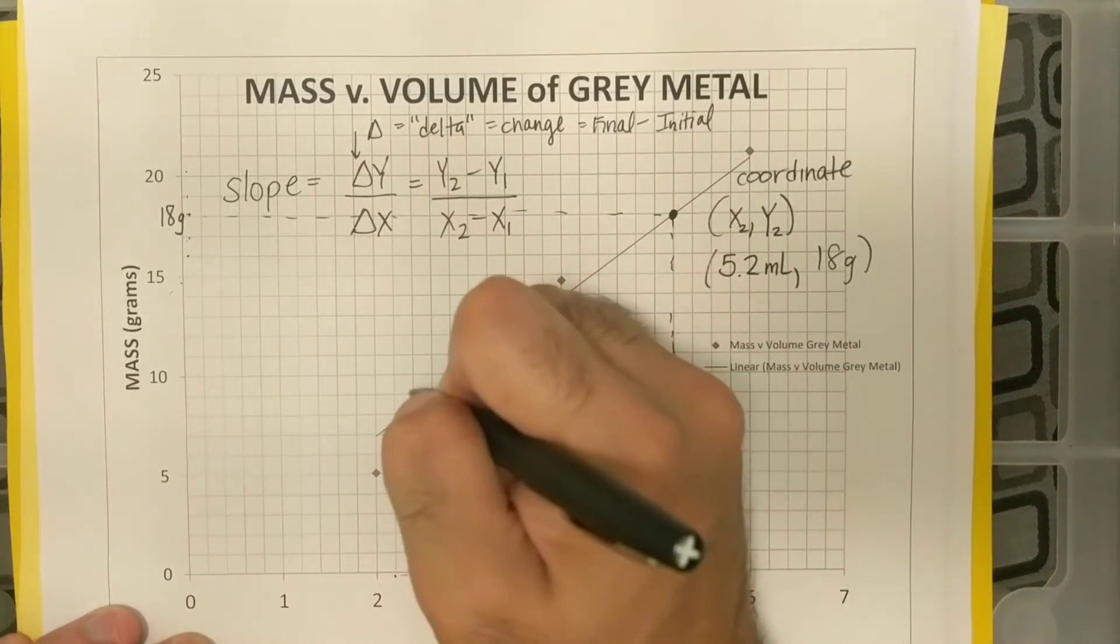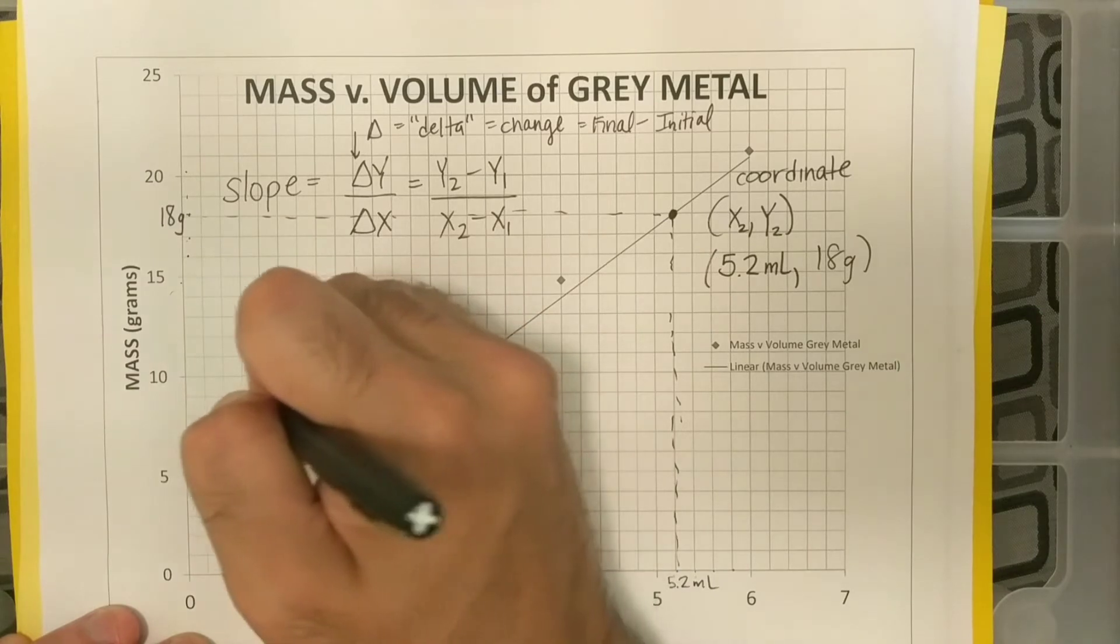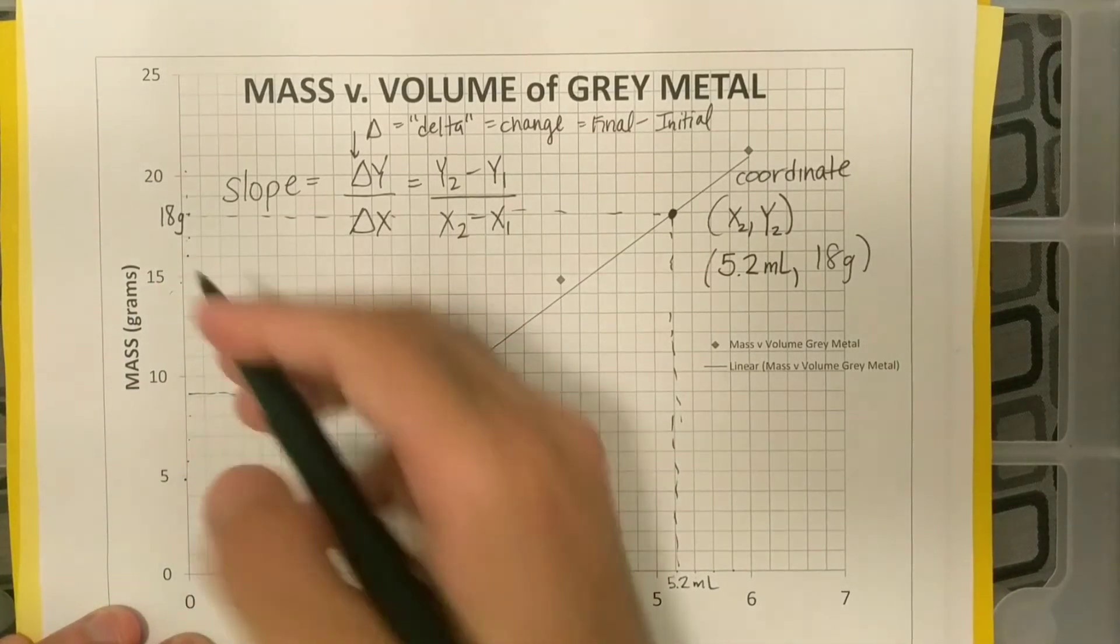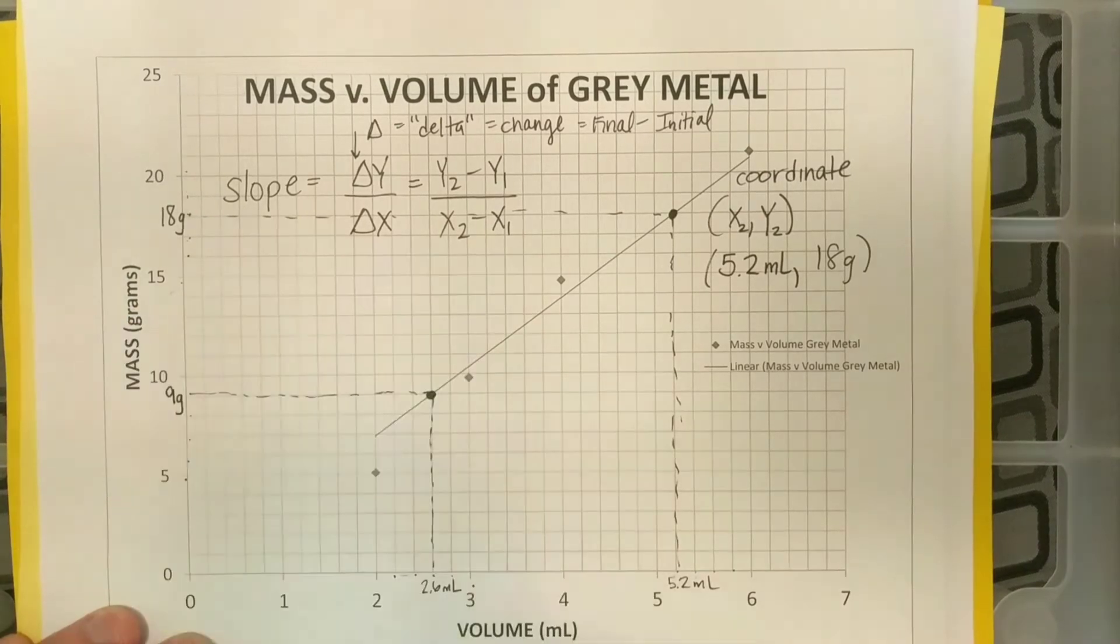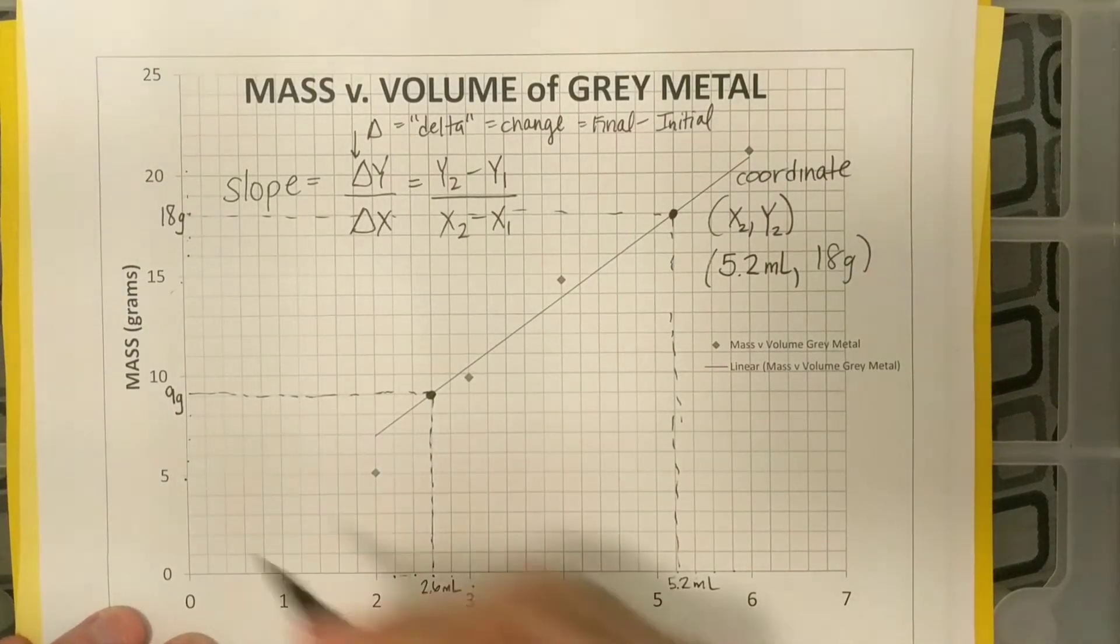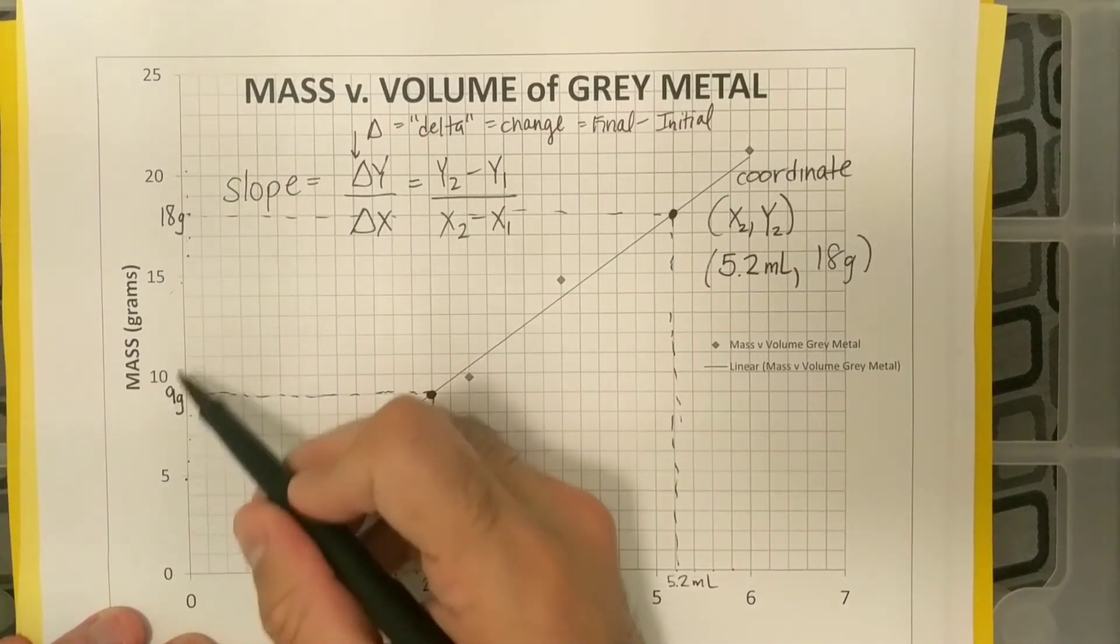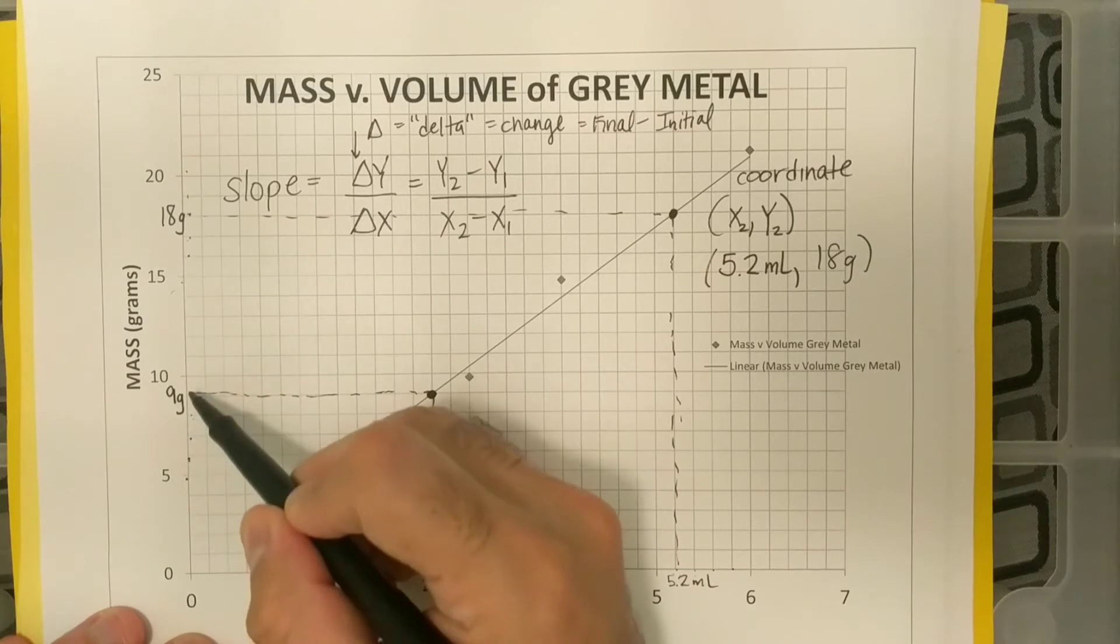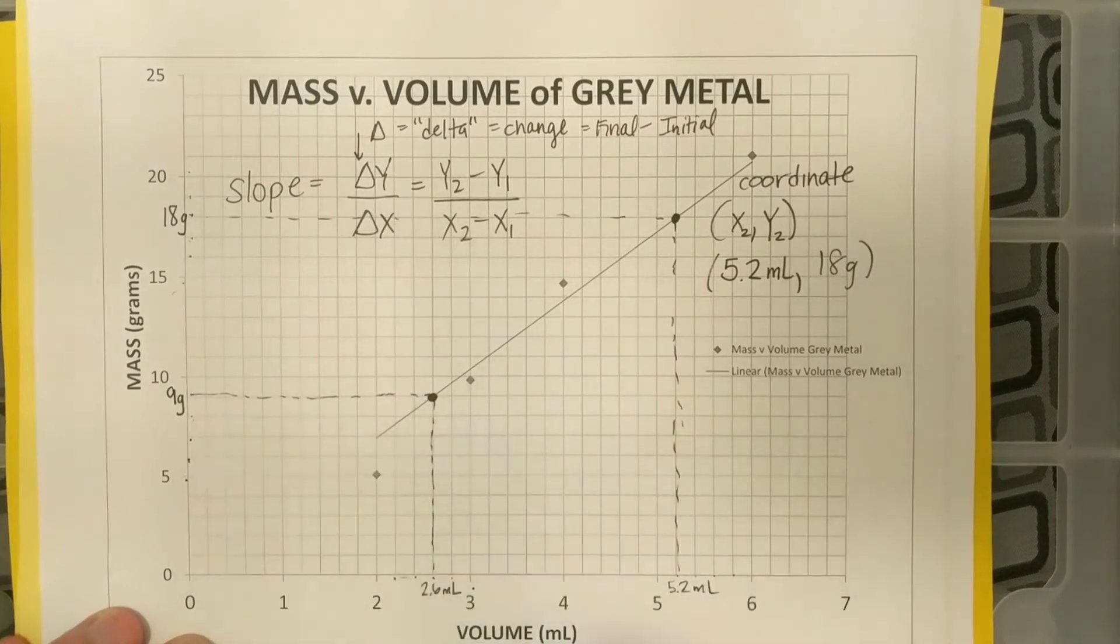And then let me go over onto the y-axis where the grams are, and it looks like it's at 5, 6, 7, 8, 9 grams, okay? And how did I do that? Again, between 5 and 10 is four dashes, so to get to 5 to 10, 5, 6, 7, 8, 9, 10, okay?